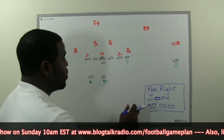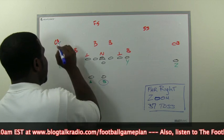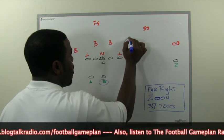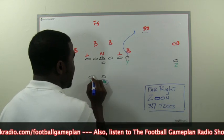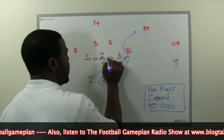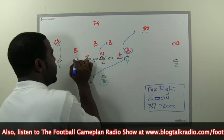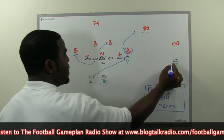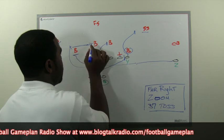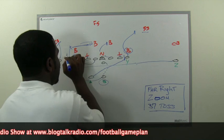Far Right Zoom 37 Toss, attacking the seven hole — the outside. The X blocks the corner. Backside, slow blocking — chip the backer, then work to the strong safety. The A back with that slight misdirection comes backside and takes out the backer. Combo and combo, the center combos to the Mike backer. Big on big, tackle on tackle. We pull the play side guard to take out the backer. The zoom motion comes across the formation and leads up to take out the force player. The quarterback reverses out like he's handing off and tosses to the B back sweeping around the outside with one man to beat.